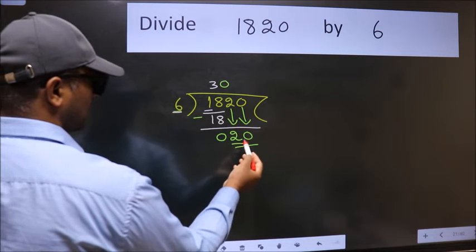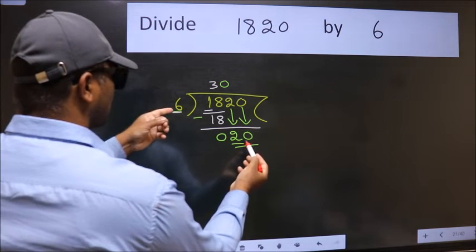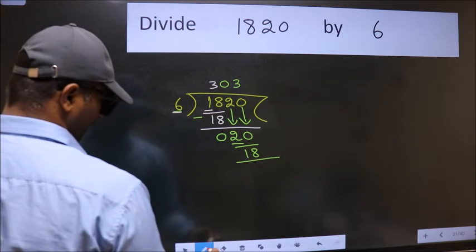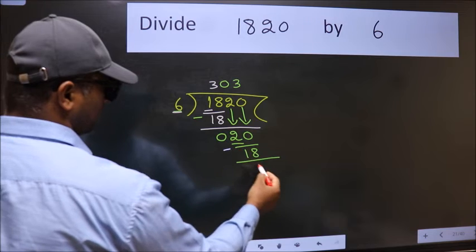So, 20. A number close to 20 in the 6 table is 6 times 3 is 18. Now, we subtract. We get 2.